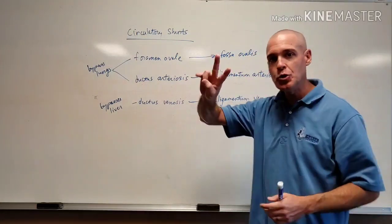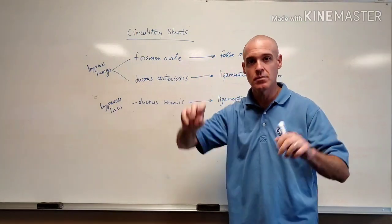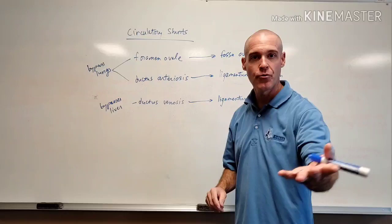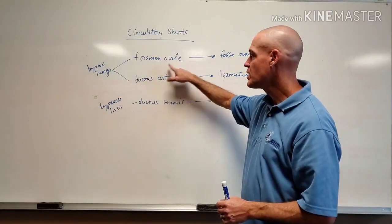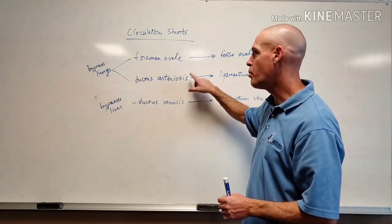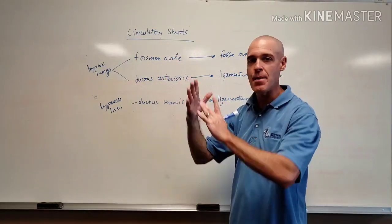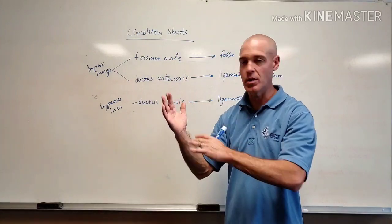So what are the two bypasses or shunts in the circulatory system for the lungs? It's going to be one called the foramen ovale and one called the ductus arteriosus, both of which are bypasses for the lungs.